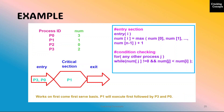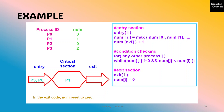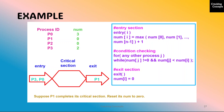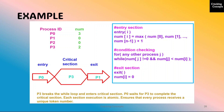This works on a first-come-first-served basis. So p1 will be executed, followed by p3 and then p0. In the exit code, the num value is reset to 0. When p1 completes the critical section, its num value is reset to 0. p3 will then break the while loop and enter the critical section. p0 will wait for p3 to complete.